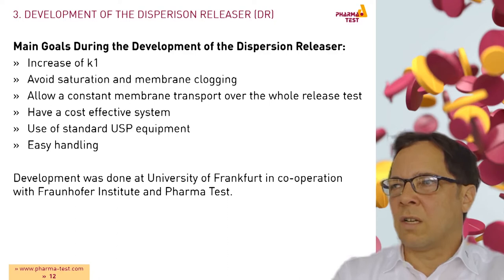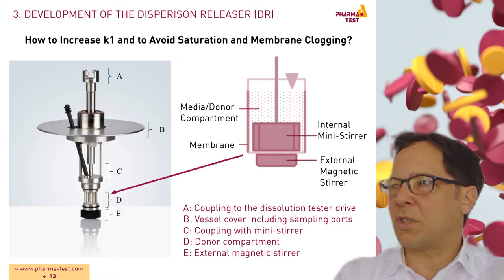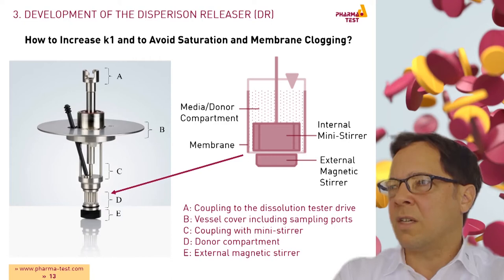The development was done at the University of Frankfurt in cooperation with Fraunhofer Institute and PharmaTest AG. To increase the pressure to the membrane and improve the equal distribution in the donor compartment, an internal stirrer was used. It could be shown that the use of the internal stirrer has a positive effect on K1. The stirrer also has a positive effect on homogeneity. The University of Frankfurt and Fraunhofer Institute found that concentration gradients in the acceptor compartment near to the membrane also have an effect on the release rate of the API. An additional external stirrer was used to provide homogeneity in the acceptor compartment too.